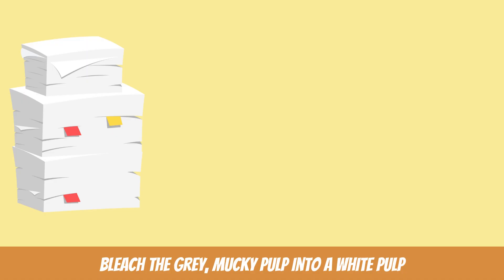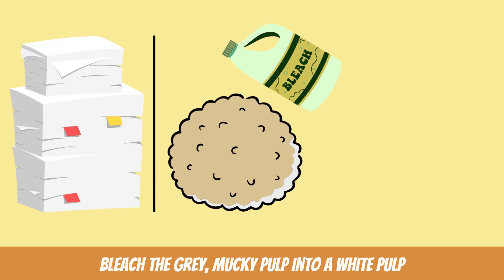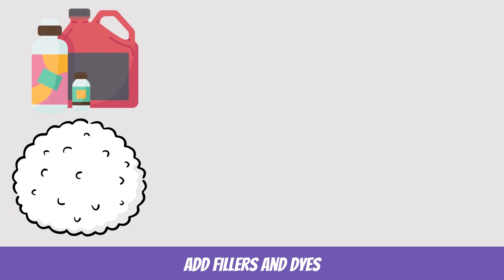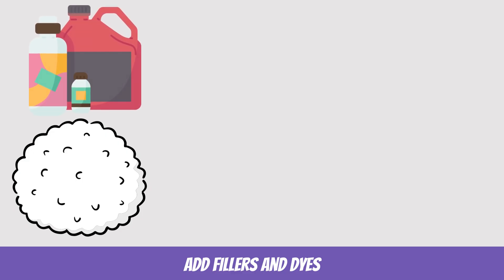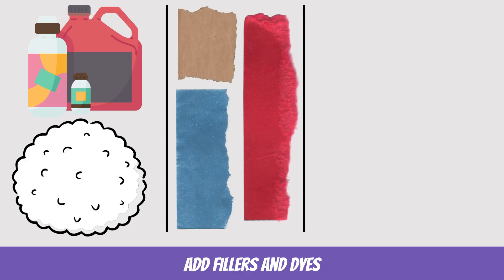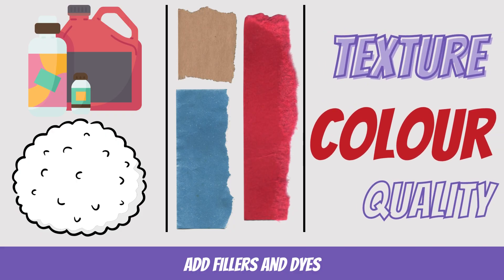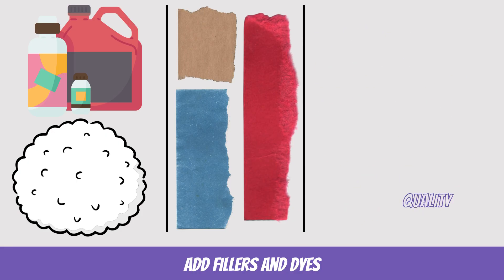Both methods produce pulp that is then washed and screened to remove any impurities. In order to get that white paper, we have to bleach the grey, mucky pulp into a white pulp. The next step is to add fillers and dyes — it all depends on the type of paper being produced. At this stage, we are able to change the texture, quality and colour of the paper.